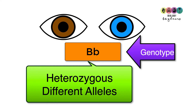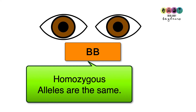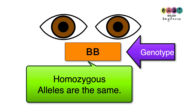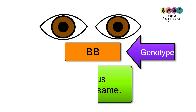They have different alleles, so they're heterozygous. Let's look at another case: this person has two capital B alleles — two dominant alleles, one on each chromosome. Their genotype is capital B, capital B, and it's termed homozygous because the alleles are the same. They'd still be brown eyed because there's at least one dominant allele, but because the alleles are the same, they're classed as homozygous.